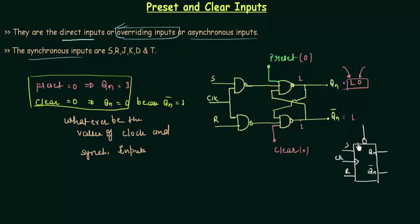It shows that it is active low signal. Whenever it is low, the output will be generated. And whenever clear is low, the output will also be generated. So we put bubble here to show that it is active low signal. And this is the representation with preset and clear inputs.